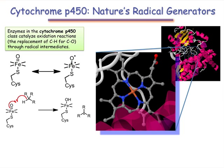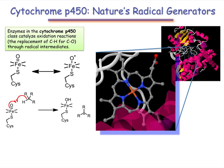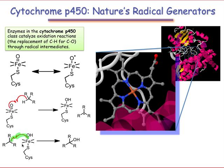Although the carbon is drawn as sp3 hybridized here, aryl and alkenyl hydrogens may also be abstracted. This process produces an organic radical and an iron radical bound to a hydroxyl group. The hydroxyl group is then able to rebound onto the organic radical, with the net effect that the oxygen atom of the FeO double bond has inserted itself into the C–H bond and the iron has been reduced.